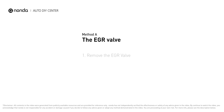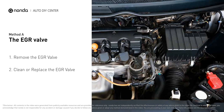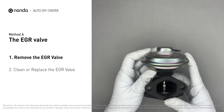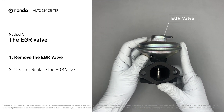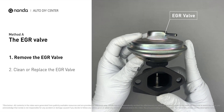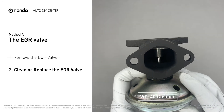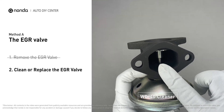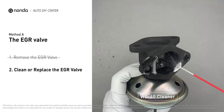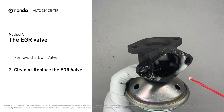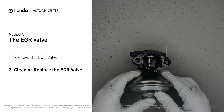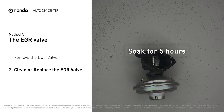Method A: the EGR valve. Looking at the engine from the front, the EGR valve is located towards the rear of the engine, just to the right side of the center. First, carefully remove the EGR valve from your car. Turn the EGR valve upside down and fill it up with WD40 cleaner. Let it soak for five hours for the solvent to get rid of all the carbon buildup.